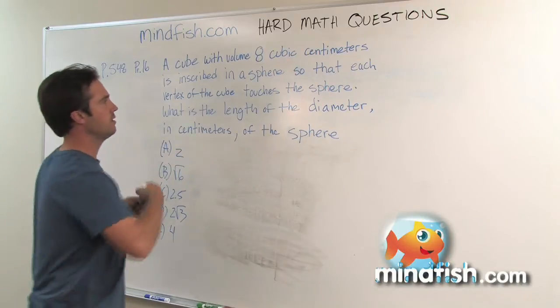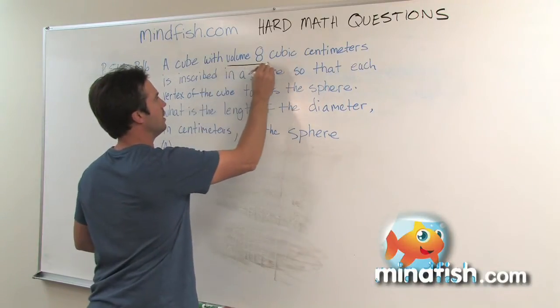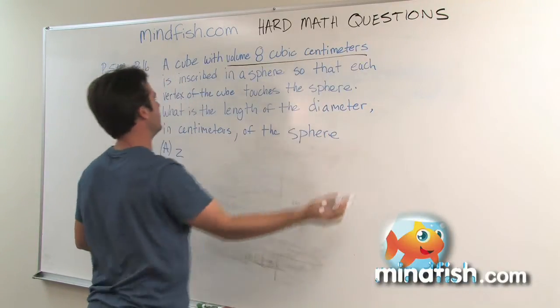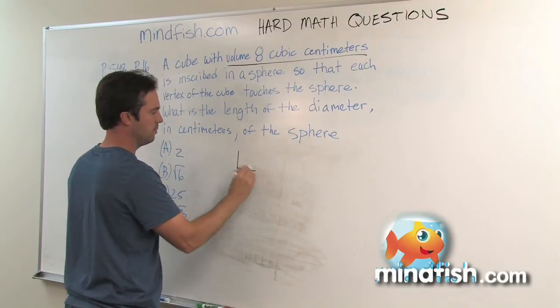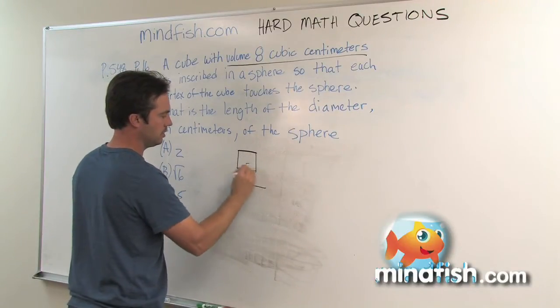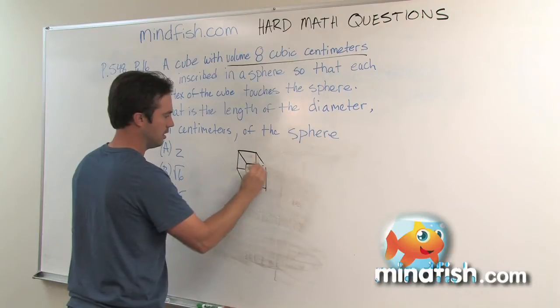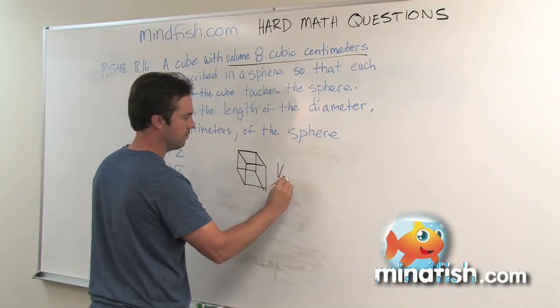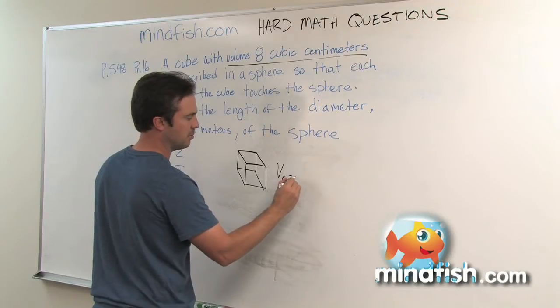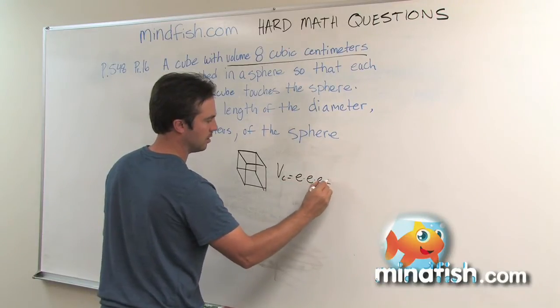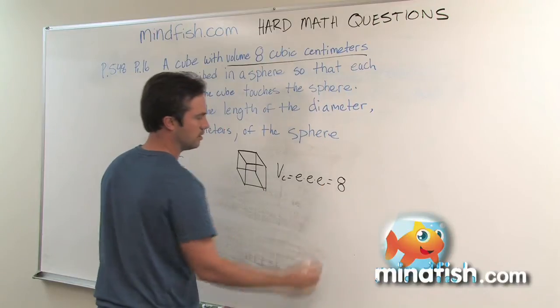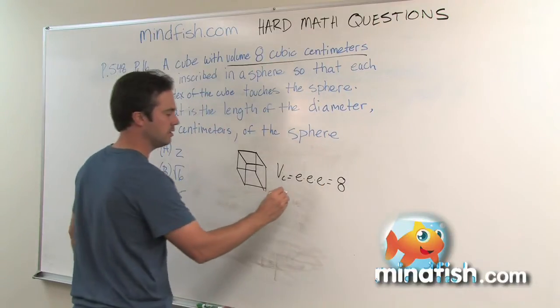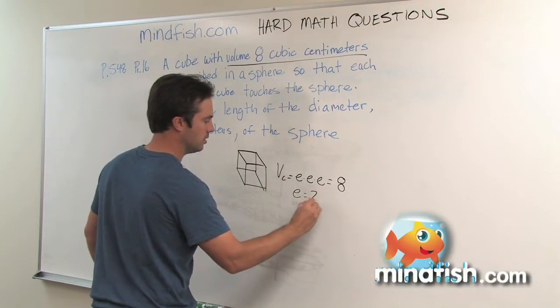The first thing we have to deal with is this volume of eight cubic centimeters for a cube. A cube is just essentially a perfect square, like a die. The volume of a cube is length times width times height, but in this case they're all the same, so it's edge times edge times edge. So that's eight, which tells us that the edge equals two.